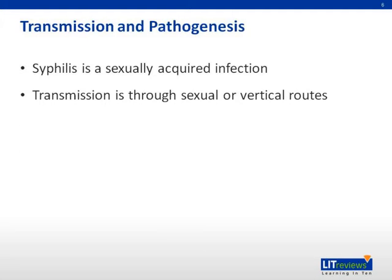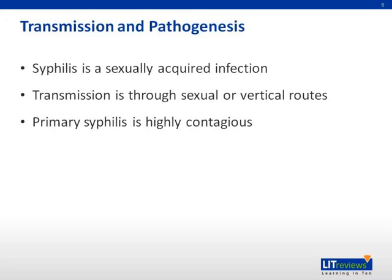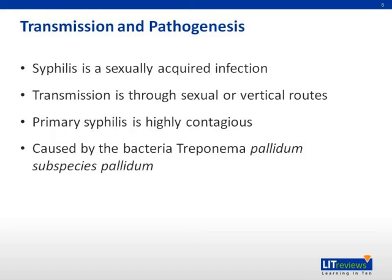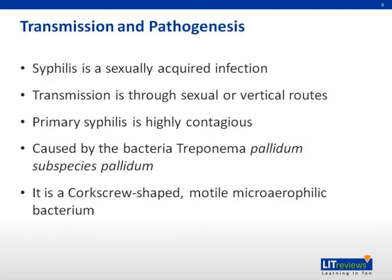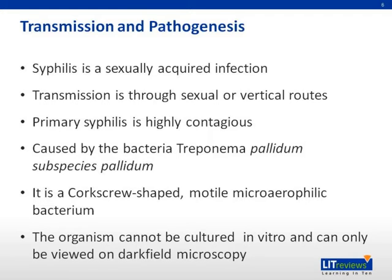Syphilis is transmitted via sexual and vertical routes. It is most contagious to sex partners during the primary and secondary stages. The etiological agent is Treponema pallidum, subspecies pallidum. It is a corkscrew-shaped, motile, microaerophilic bacterium. It is important to remember that the bacterium cannot be cultured in vitro and cannot be viewed by normal light microscopy. It can only be visualized via specialized dark field microscopy.